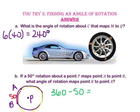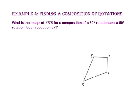In Example 4, we will find a composition of rotations. What is the image of polygon KITE for a composition of a 30 degree rotation and a 60 degree rotation, both about point K? Let's start by finding our final rotation: 30 plus 60 degrees gives a sum of 90 degrees. Let's use a protractor to measure a 90 degree angle with vertex K and side KI.